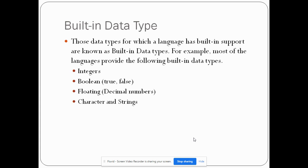Built-in data types are those data types for which a language has built-in support. Most languages provide the following built-in data types: integers, which are whole numbers; boolean, which can have two possible values — true or false; floating, which are numbers that can have decimals or fractions; and characters and strings. These are usually the built-in data types.